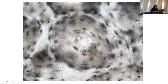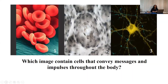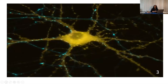Let's talk about function number two. Which image contains cells that convey messages and impulses throughout the body? If I was thinking about something that had to receive or convey a message, I would be looking for an image that has branches. So if you guessed image number three, you would be correct. This is the image of a nerve cell. Our nerves receive and send different impulses so that different portions of our body can communicate.